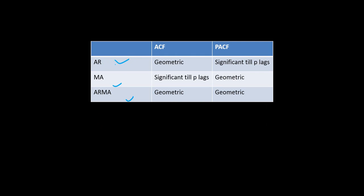For example, in an AR process, the ACF function follows a geometric decay. The PACF function is significant only till the Pth lag. In the MA process, the ACF function is significant till the Pth lag, whereas the PACF follows geometric decay — it's just the opposite of AR.